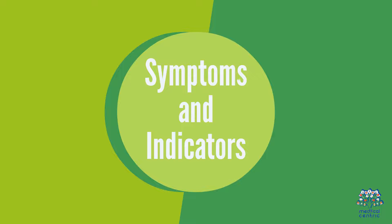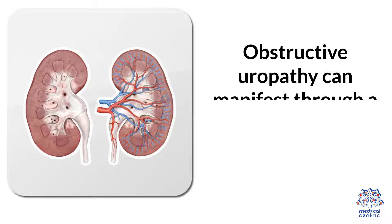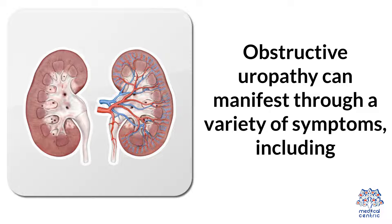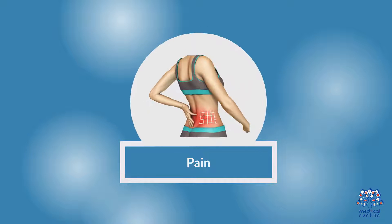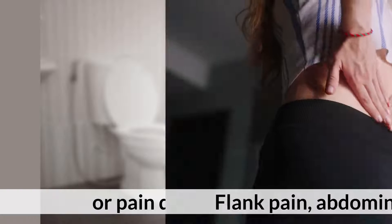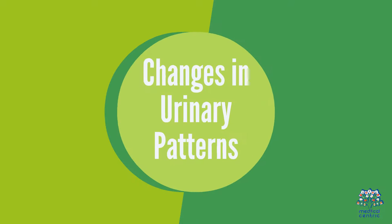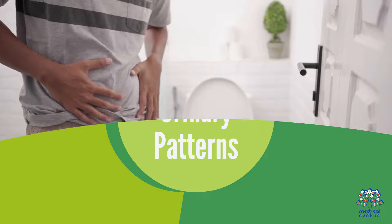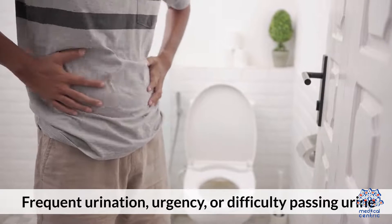Symptoms and Indicators: Obstructive uropathy can manifest through a variety of symptoms including pain — flank pain, abdominal discomfort, or pain during urination. It can also cause changes in urinary patterns such as frequent urination, urgency, or difficulty passing urine.